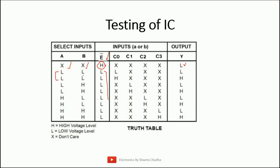With the multiplexer enabled: when select lines are 0-0, output follows C0 — if C0 is low, output is low; if C0 is high, output is high. When select lines are 0-1, output follows C1. When select lines are 1-0, output follows C2. When select lines are 1-1, C3 is the output. This process can be used to verify the IC on a digital trainer kit.